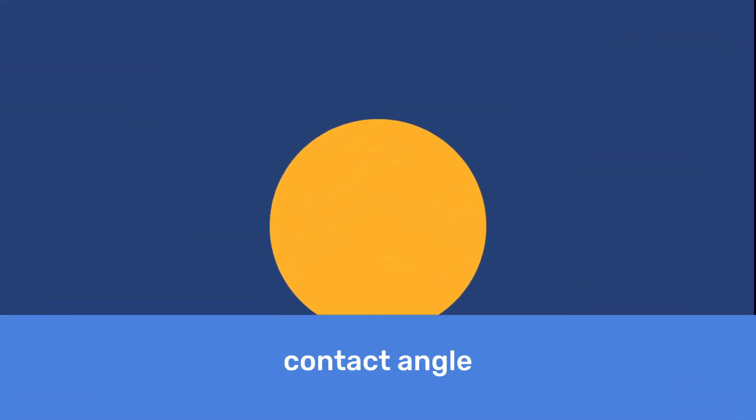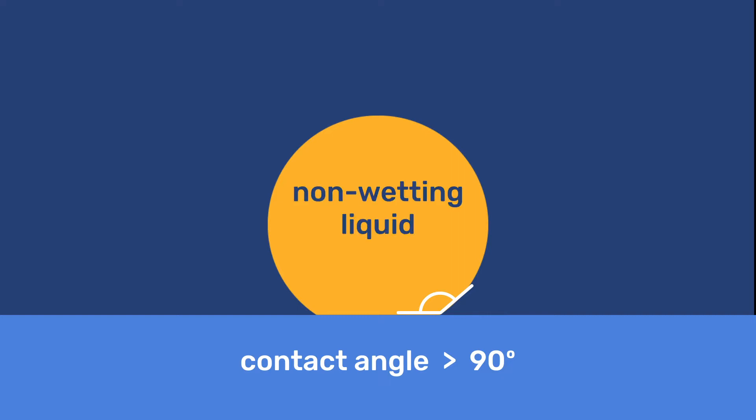For example, non-stick frying pans are made in such a way that liquids do not spread on their surface. In this case, the contact angle taken in the liquid between the liquid and the surface is larger than 90 degrees, and the liquids are said to be non-wetting.